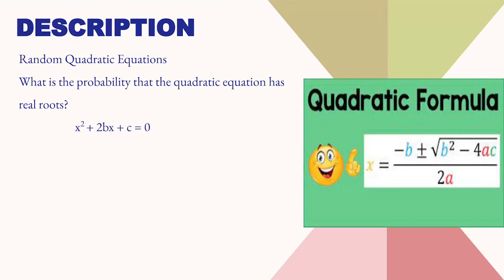Here is the description of the problem. In this problem, we have to find the probability that the quadratic equation has real roots. The quadratic equation is x squared plus 2bx plus c equals to 0. Now, let's look at the solution.